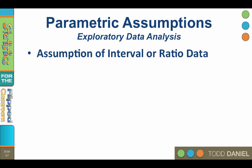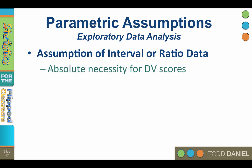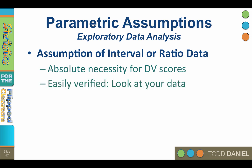First, the assumption of interval or ratio data. This is an absolute necessity for your dependent variable scores — you can't do parametric statistics with nominal dependent variable data. You can do other kinds of tests, but not parametric tests. The assumption of interval or ratio data is easily verified: look at your data. Have lots of ones and zeros? You have categorical data. Lots of numbers within a range? Now you can do parametric statistics.